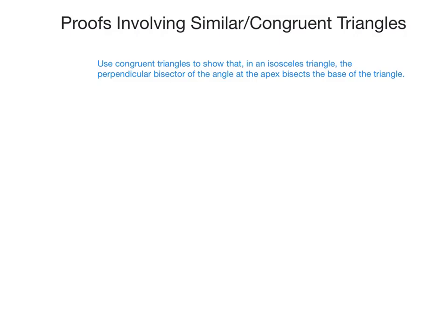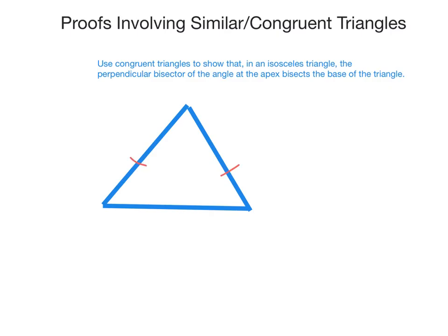Let's start by drawing a diagram so we can make sense of all these words. So let's say I have this triangle here, and I know that it is isosceles — we've got two equal sides. This point up here is called the apex.